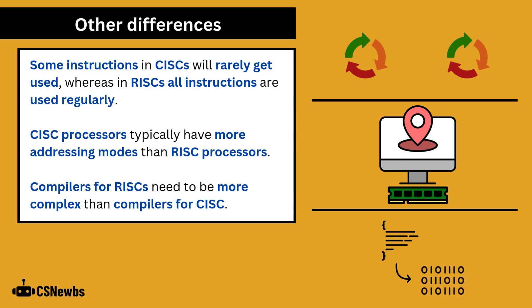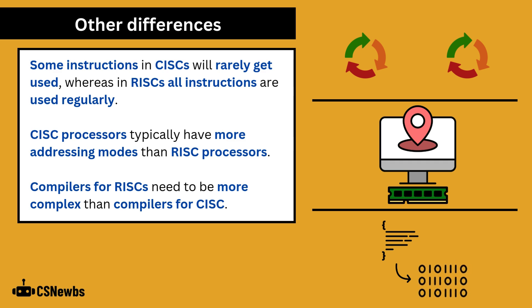Finally, because RISC uses more instructions to perform a task, the compiler will be more complex. Compilers and the stages of compilation will be looked at in 2.2d and 2.2e.